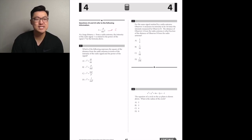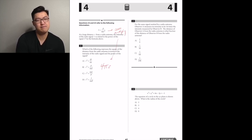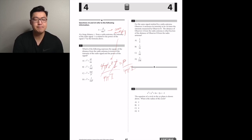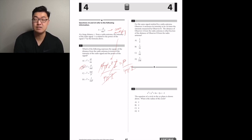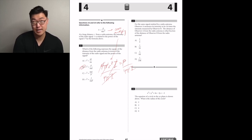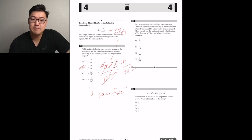At a large distance r from a radio antenna, intensity I is related to power P by a formula. Which expression gives r squared in terms of I and P? Just solve for r squared: cross multiply to get I times 4πr² on the left, then divide by 4πI to get r² = P over 4πI. There's only one option that matches — B.